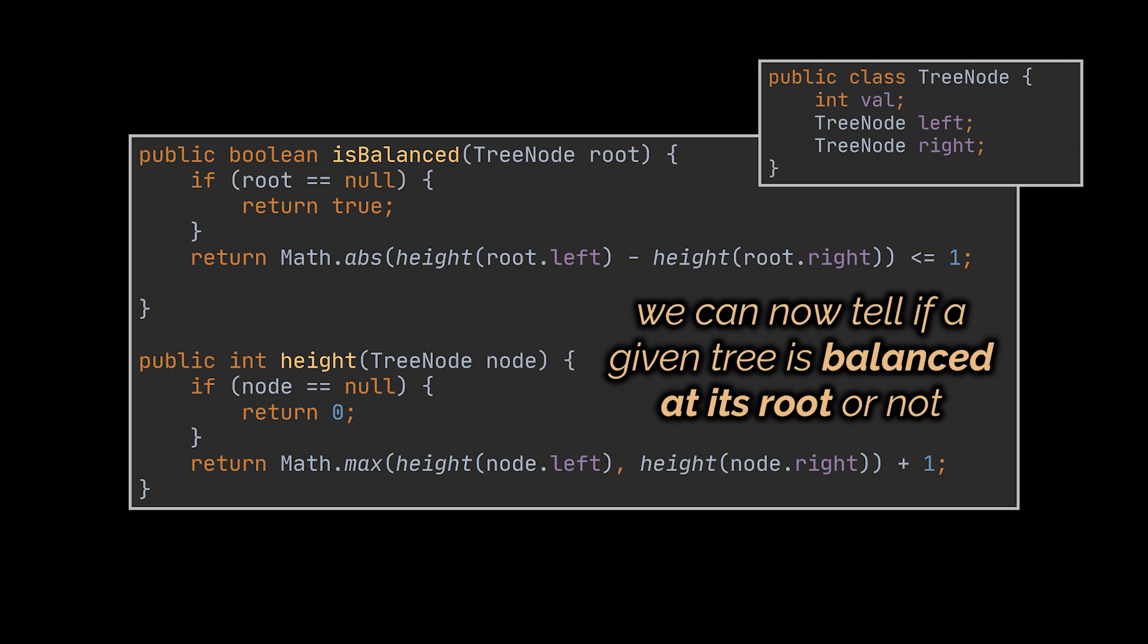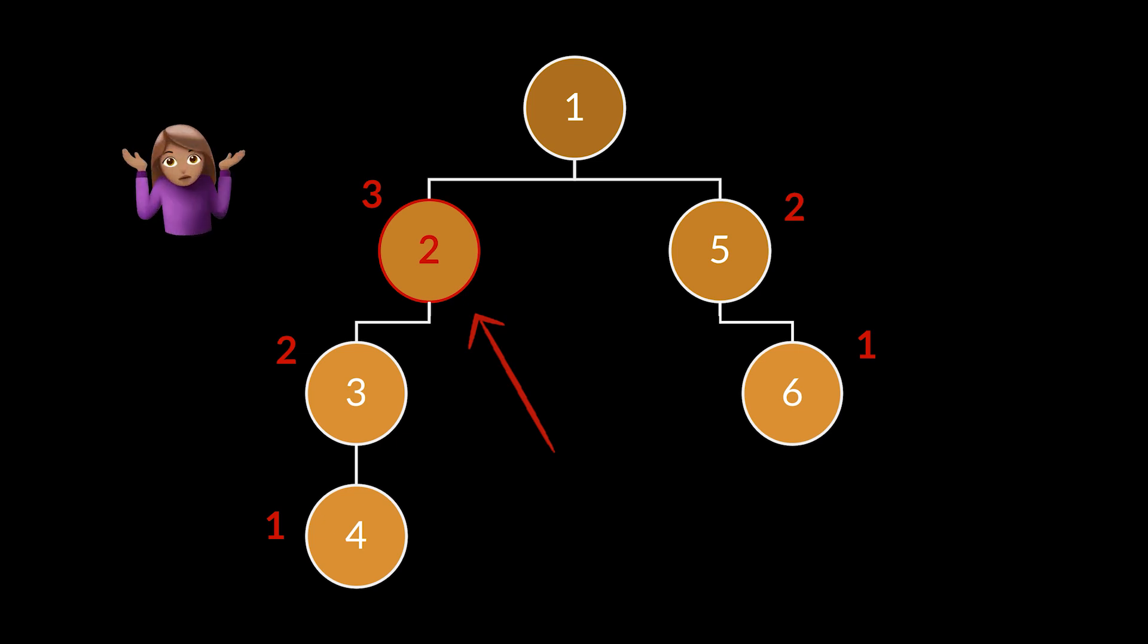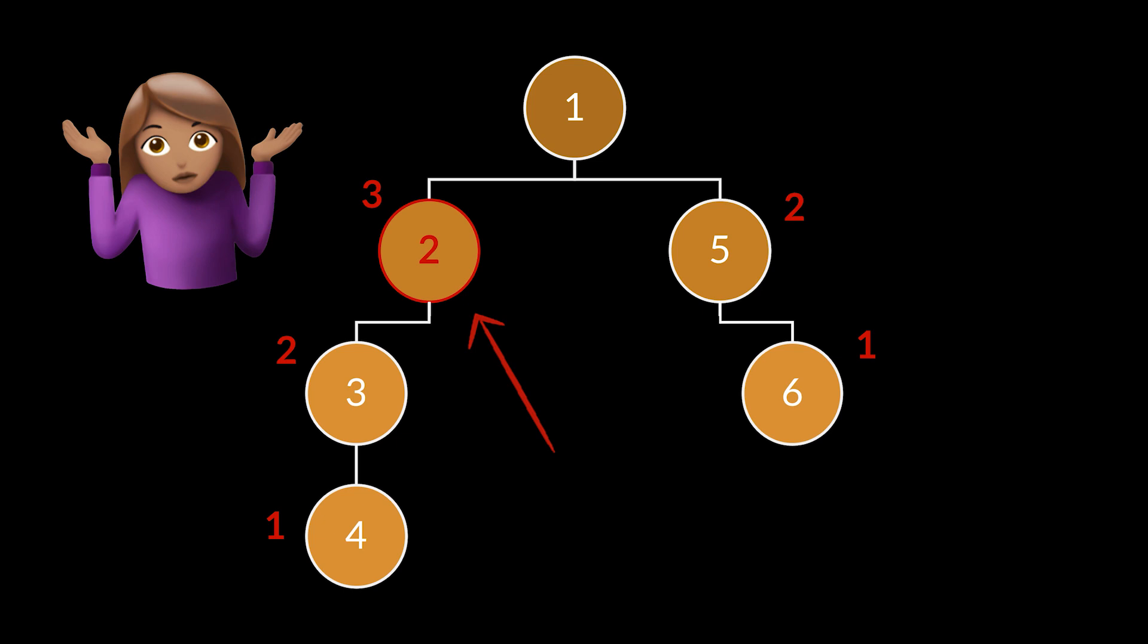Now what if after solving this problem, the interviewer asks you to figure out if a given tree is balanced at each node and not only at its root? To visualize this, take this tree as an example. You can clearly see here that this tree is balanced at its root, as the difference in height between its left and right children is one. But what about this node in red? The height of its left child is two whereas the height of its right child is zero, making it non-balanced.